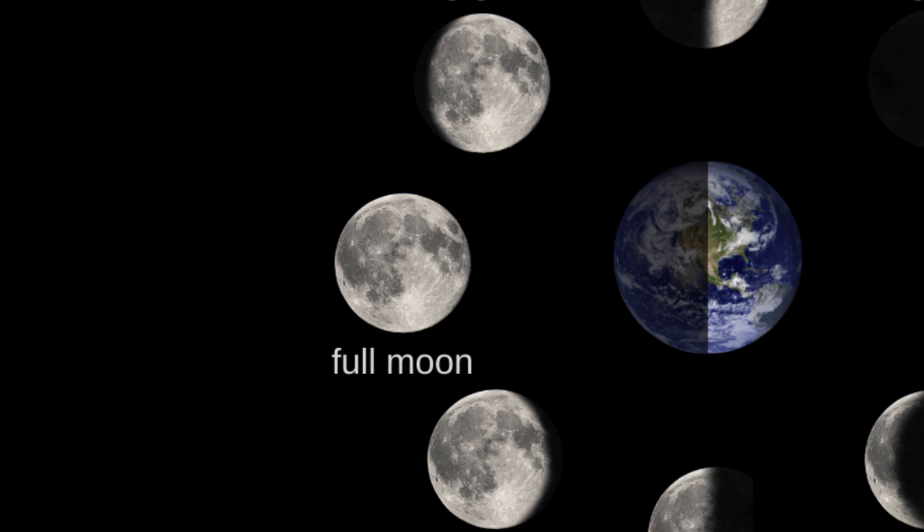Full moon. Two weeks into the cycle, the moon is directly opposite the sun, and its entire face is illuminated. This is the full moon, a time traditionally associated with various cultural and natural phenomena.